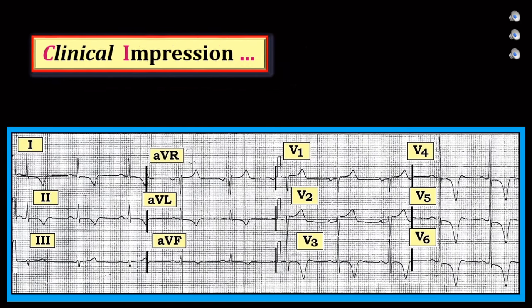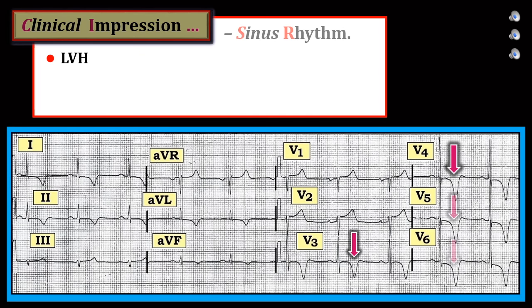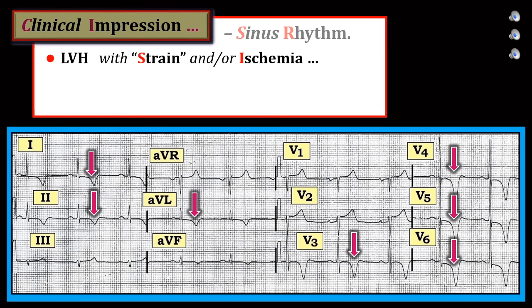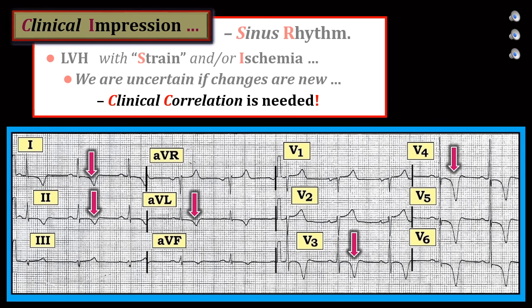Let's now put these findings together to formulate our clinical impression. To summarize what we've noted thus far, the ECG shows sinus rhythm at about 60 per minute with LVH and ST segment coving with deep symmetric T-wave inversion in multiple leads. At the least, this ST-T wave appearance is consistent with LV strain and/or ischemia. And since this 50-year-old man is having chest pain, this ECG picture certainly could reflect an acute cardiac event. But it's also possible that the ECG picture we see is not new, but long-standing without any acute change. We simply cannot tell from the single ECG alone. So clinical correlation, including careful history, clinical exam, lab and echo findings, and ideally comparison with prior tracings, will all be needed to determine if these ECG findings are new and, if so, what they might mean.